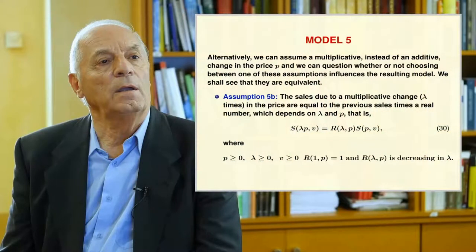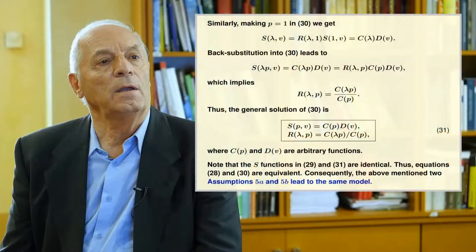Model 5 considers a multiplicative instead of additive change in price P, asking whether this influences the resulting model. Assumption 5b states that sales due to a multiplicative change lambda in price are equal to the previous sales times a real number depending on lambda and Pi, that is, equation 30. Making Pi equal to 1 in 30 and back-substituting yields the general solution 31, where C and D are arbitrary functions. The S functions in 29 and 31 are identical, so equations 28 and 30 are equivalent — Assumptions 5a and 5b lead to the same model.